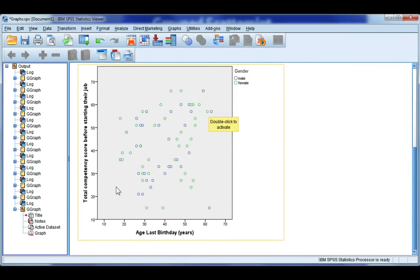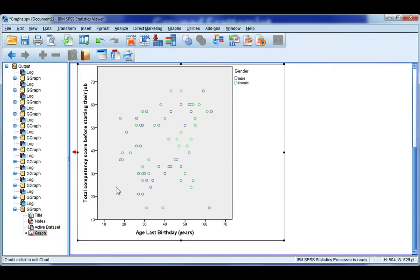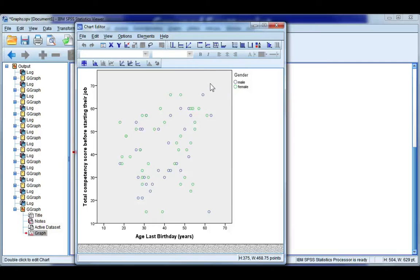Now to add our trend lines, double click to open the chart editor. Up here at the top, we've got an icon that says add fit line at subgroups, and that's what we want because I want a separate line for males and females.